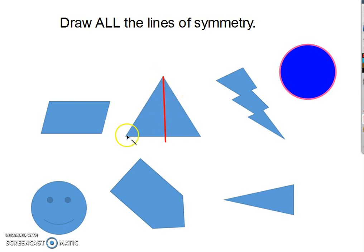One from each vertex through to the middle of the other side, and if I did it right they should all meet right in the middle. Lightning bolt would not have a line of symmetry. I mean, look, if I draw a line through there is it the same on both sides? No.